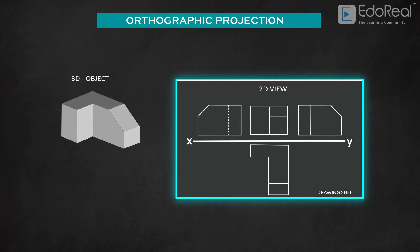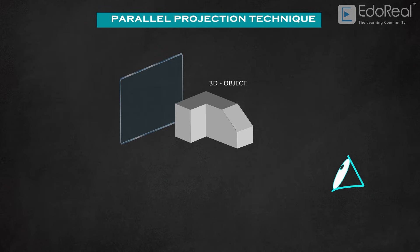We get these two-dimensional shapes using parallel projection technique. In parallel projection, we project rays or line of sight onto the object that produces two-dimensional shapes on the screen or projection plane placed behind the object.